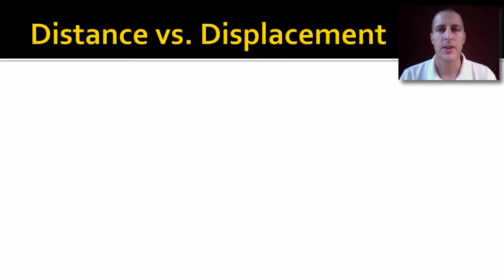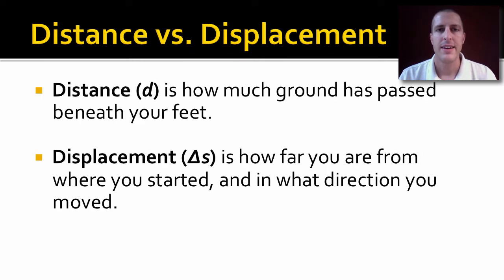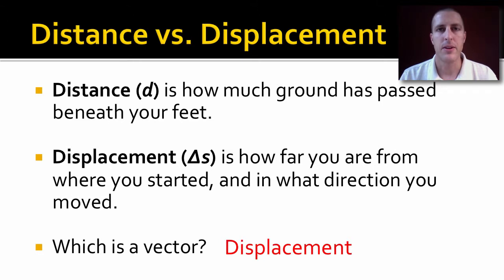Now, our first quantities we're going to talk about are distance and displacement. Distance, which we write as a lowercase d, is talking about how much ground has passed beneath your feet as you're walking. It's just how far have you gone. Whereas displacement, which we write as delta s, a change in position, is how far you are from where you started. It doesn't matter how you got there. It's just how far you are from where you started. Now, which one of these is a vector? Well, the one that has direction in it is a vector. So, that's going to be displacement.